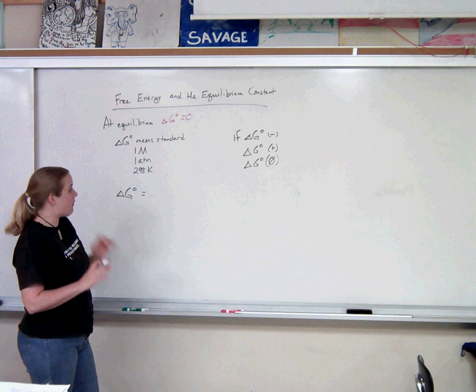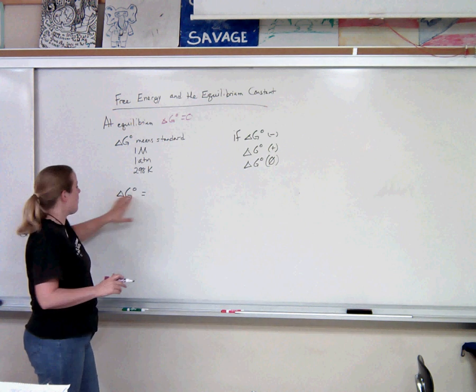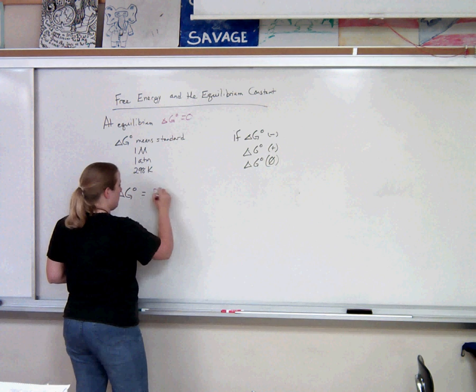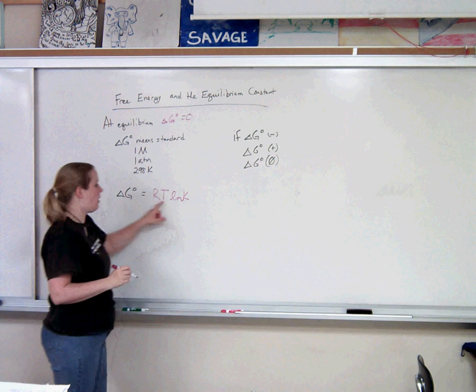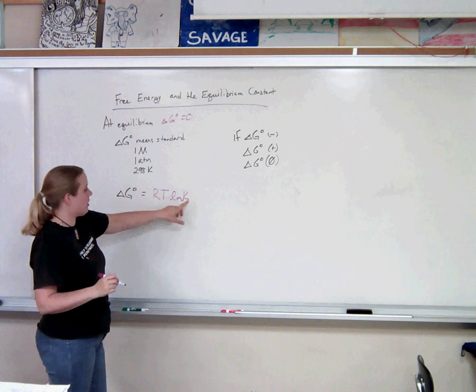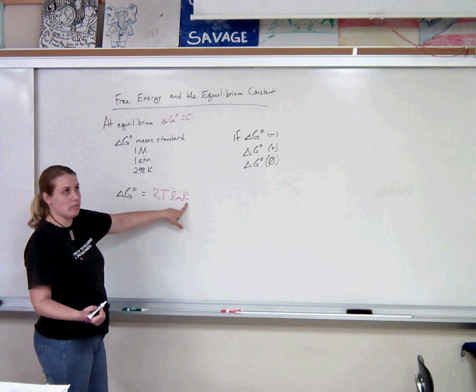If that is true, and we're under standard conditions and we're at equilibrium, then Gibbs equals negative RT natural log of K, meaning the gas law constant times temperature and then the natural log of our equilibrium expression constant.